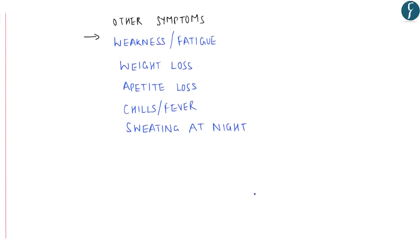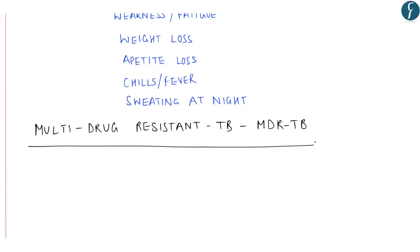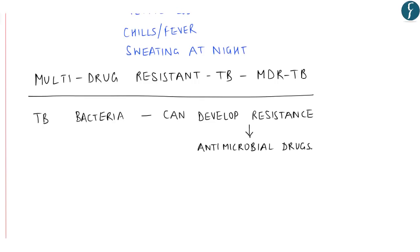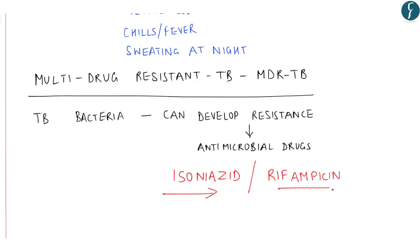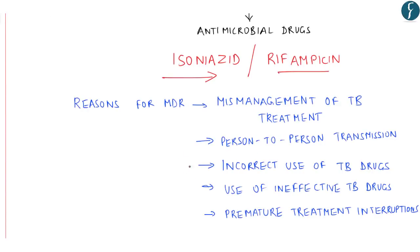Let us understand about MDR TB — multi-drug resistant TB — on which a mains question was also asked. The bacteria that cause TB can develop resistance to anti-microbial drugs used to cure the disease. In case of MDR TB, TB does not respond to the two most powerful TB drugs, namely isoniazid and rifampicin. The main reasons for the emergence of MDR TB are mismanagement of TB treatment and person-to-person transmission.